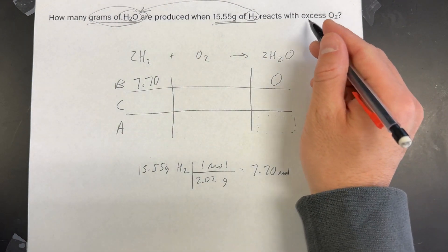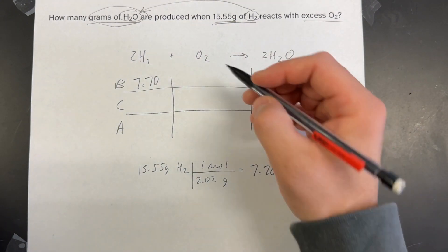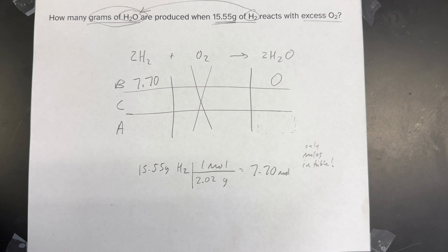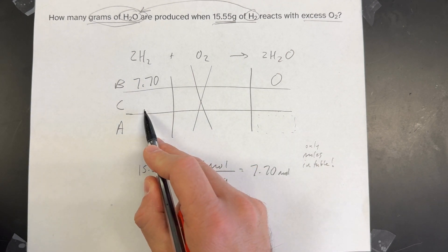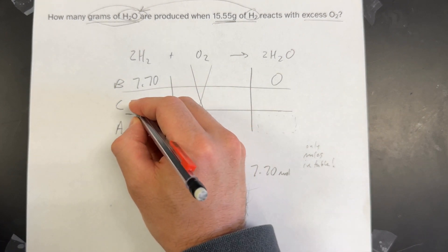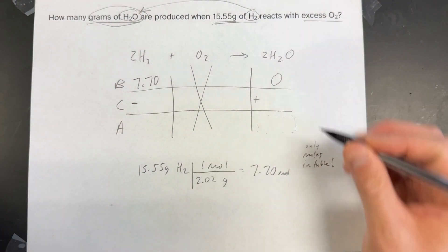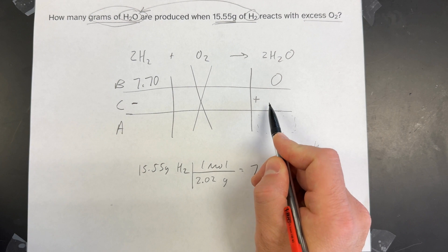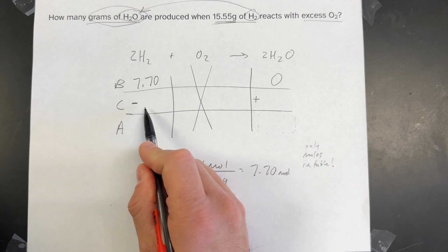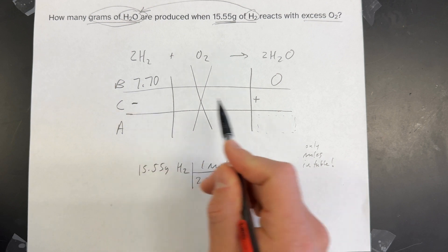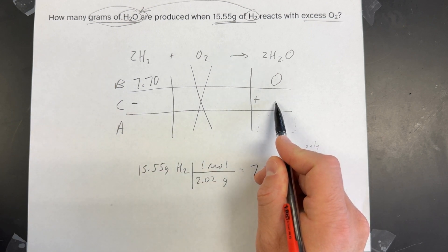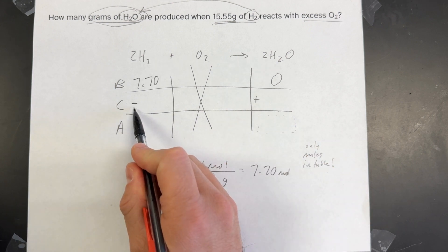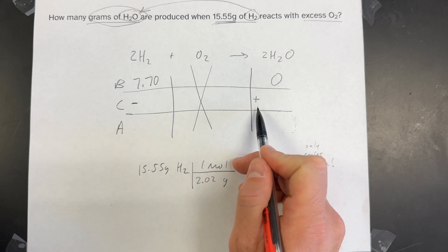The problem says we have excess O2, which means we can ignore anything about O2 because the question tells us we have as much as we need. Now that the before row is filled in, I'll go to the change row. The change for reactants is going to be negative, and the change for products is going to be positive, because we lose or use up reactants in order to gain or make products.